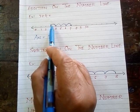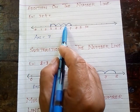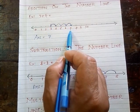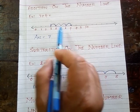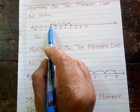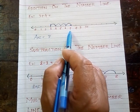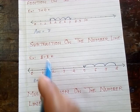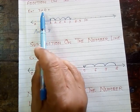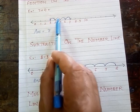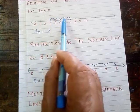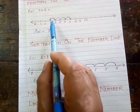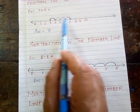Let us count from 3: 1st step, 2nd step, 3rd step, 4th step. After 4 steps, we will reach 7. So from 3, moving 4 steps to the right side, we will get 7. So 3 plus 4 is equal to 7.